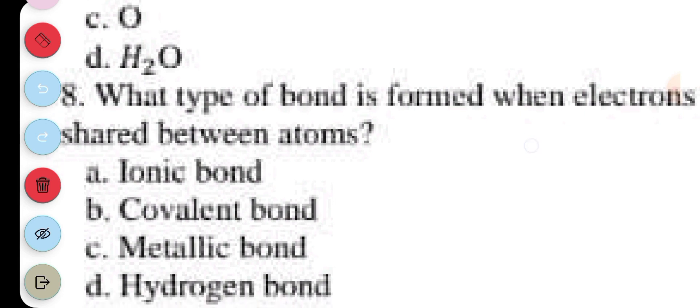Question 8. What type of bond is formed when electrons are shared between atoms? A. Ionic bond, B. Covalent bond, C. Metallic bond, D. Hydrogen bond. The answer to question 8 is B. Covalent bond.